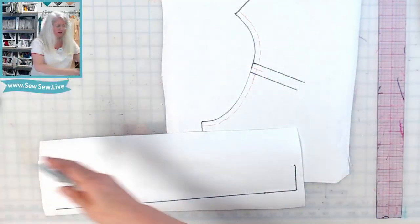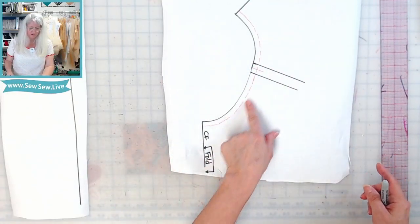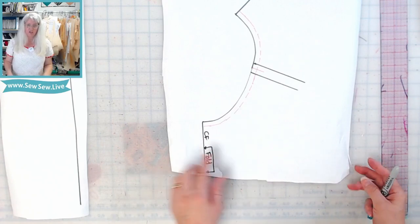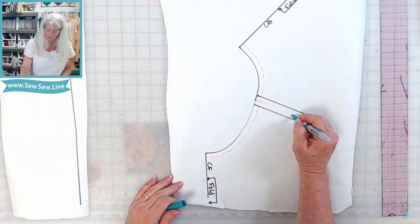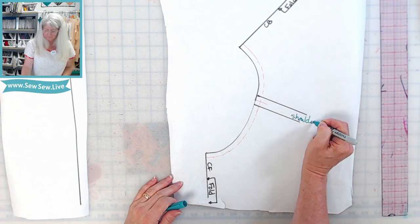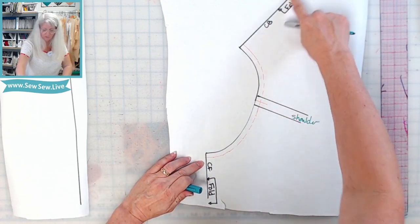So let me show you how to draft your neckband. Right here I have the center front of a t-shirt and then this is the center back. See, I have them overlapped at the shoulder, so this right here is the shoulder and I have both of them here on the fold.